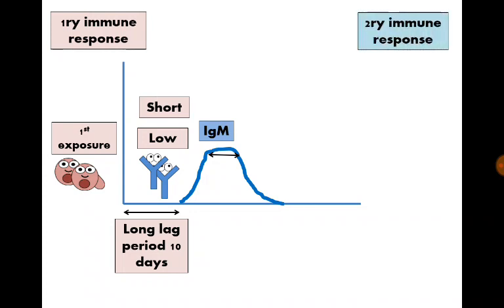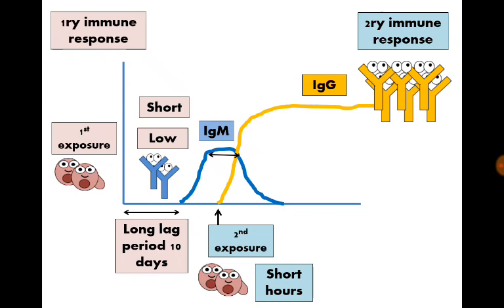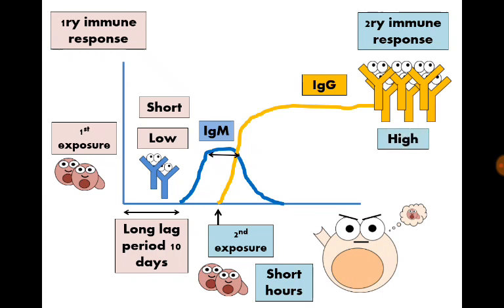What happens if this organism visits our body for a second time? A secondary immune response develops. Within short duration, just hours, high concentrations of immunoglobulin G antibodies develop. This is due to the presence of memory B-cells that were developed in the previous exposure. Immunoglobulin G antibodies persist in blood for long time, months, years, and sometimes for lifelong.